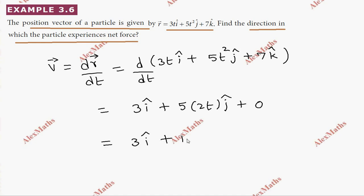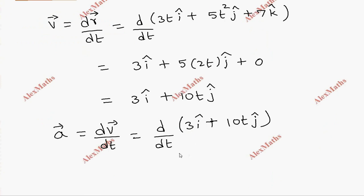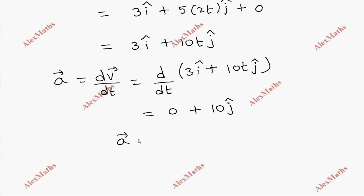So v = 3 i cap + 10t j cap. Now acceleration a = dv vector/dt = d/dt of (3 i cap + 10t j cap). Differentiating: the first term is constant so it's 0, and 10t becomes 10 j cap. Therefore, a = 10 j cap.